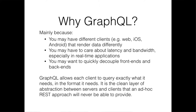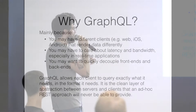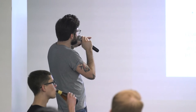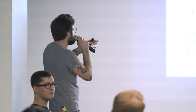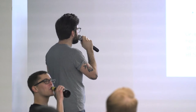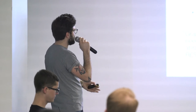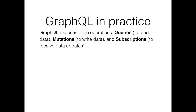Why GraphQL? Mainly because you may have different clients — a web app, iOS app, an Android app — that render data differently. You may also need to care about latency and bandwidth, especially in real-time and mobile applications. GraphQL allows each client to query exactly what it needs in the format it needs. It's a very clean layer of abstraction between your servers and clients that an ad hoc REST approach could never provide. In practice, GraphQL is simply three operations: Query to read data, Mutation to write data, and Subscription to receive updates.